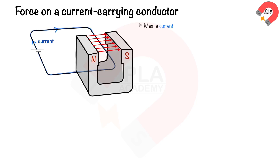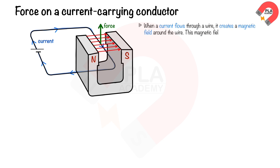When a current flows through a wire, it creates a magnetic field around the wire. This magnetic field interacts with the magnetic field of a magnet, producing a force to act on the wire upward. This causes the wire to move upward.